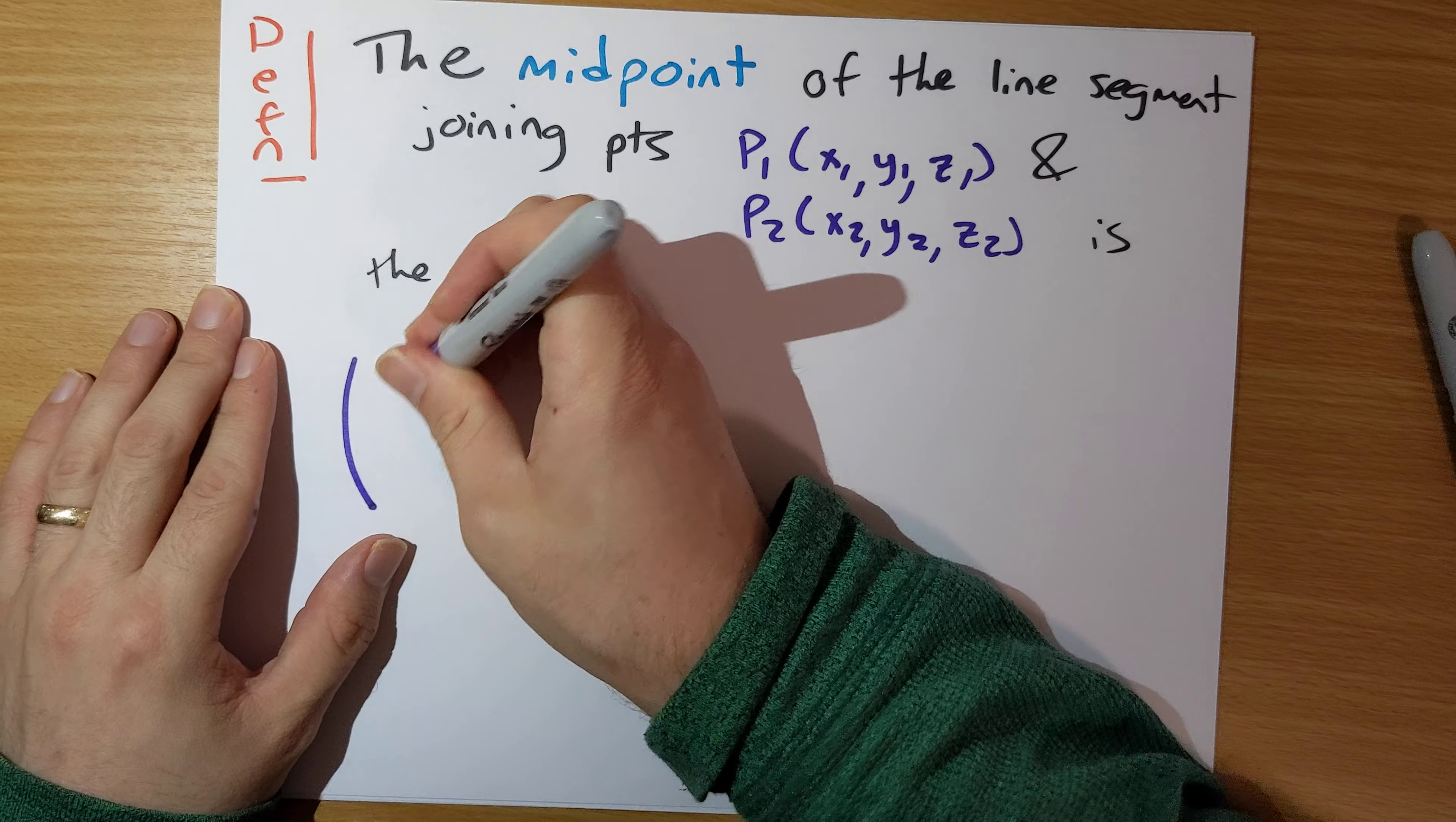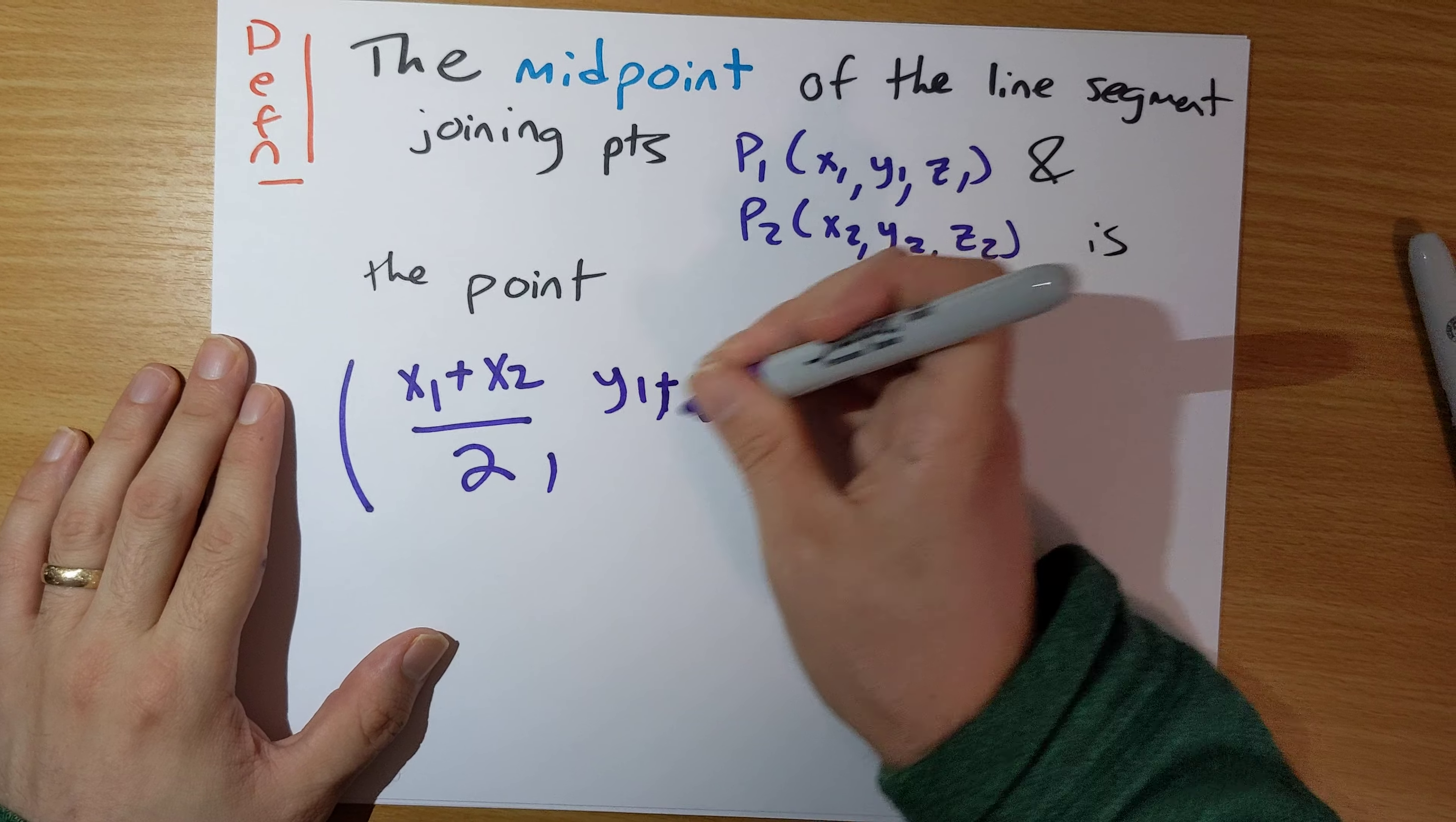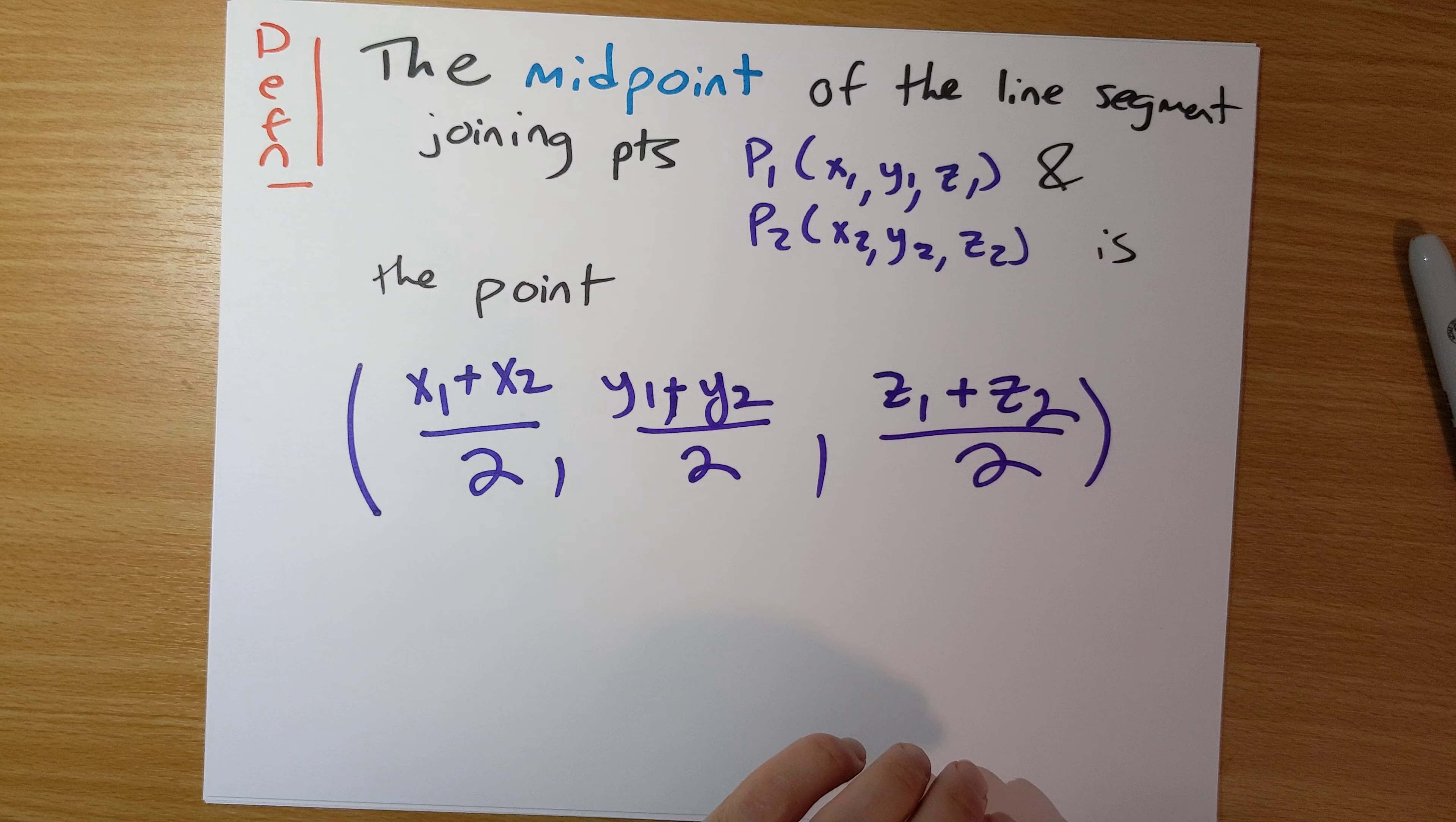What's the average of X1, X2? It's X1 plus X2 divided by 2. So just add the components of those two points together, divide by 2. The Y coordinate is going to be Y1 plus Y2 divided by 2. That's the Y entry of the midpoint here. Z1 plus Z2 divided by 2. So this is a pretty straightforward definition.